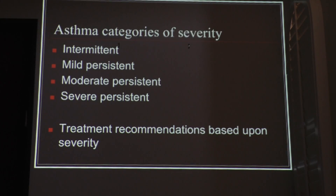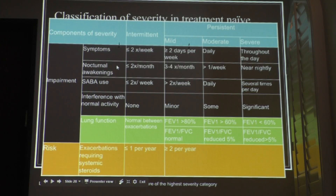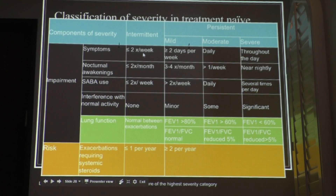Asthma is classified in four different categories: intermittent, mild persistent, moderate persistent, and severe persistent. Treatment recommendations are based on severity. I have intermittent asthma — I figured out when I was exercising I was coughing non-stop, and using my inhaler I pretty much get away without more severe interventions. When interviewing someone for asthma, you need to ask about symptoms and their frequency per week: intermittent is less than two per week.